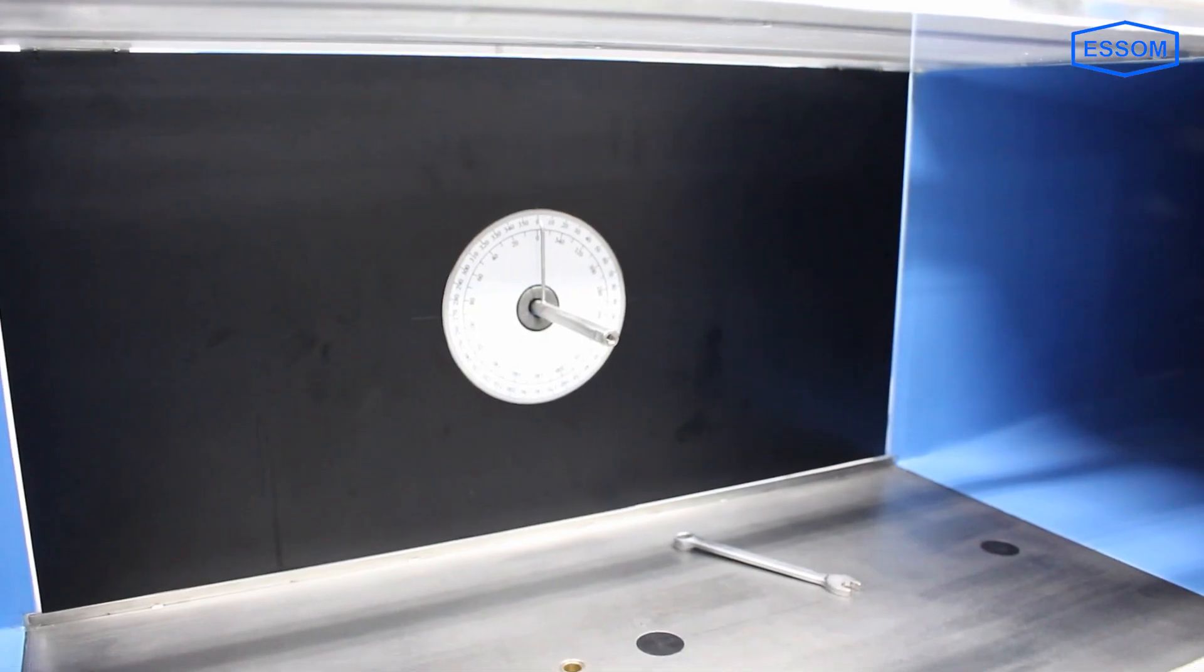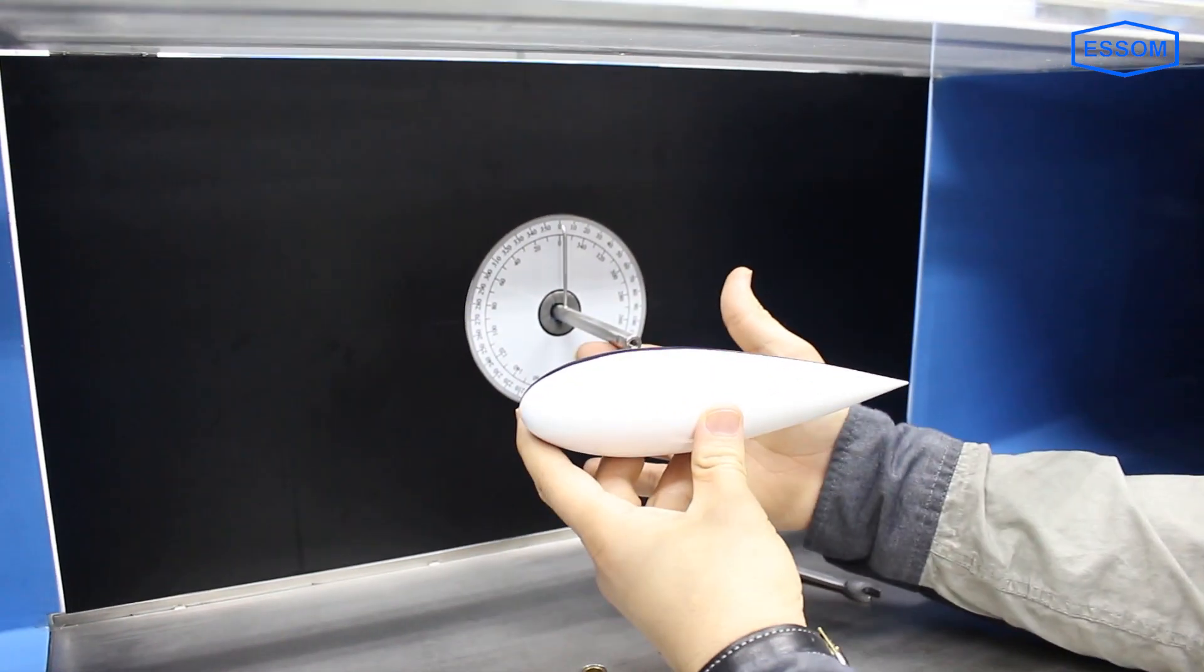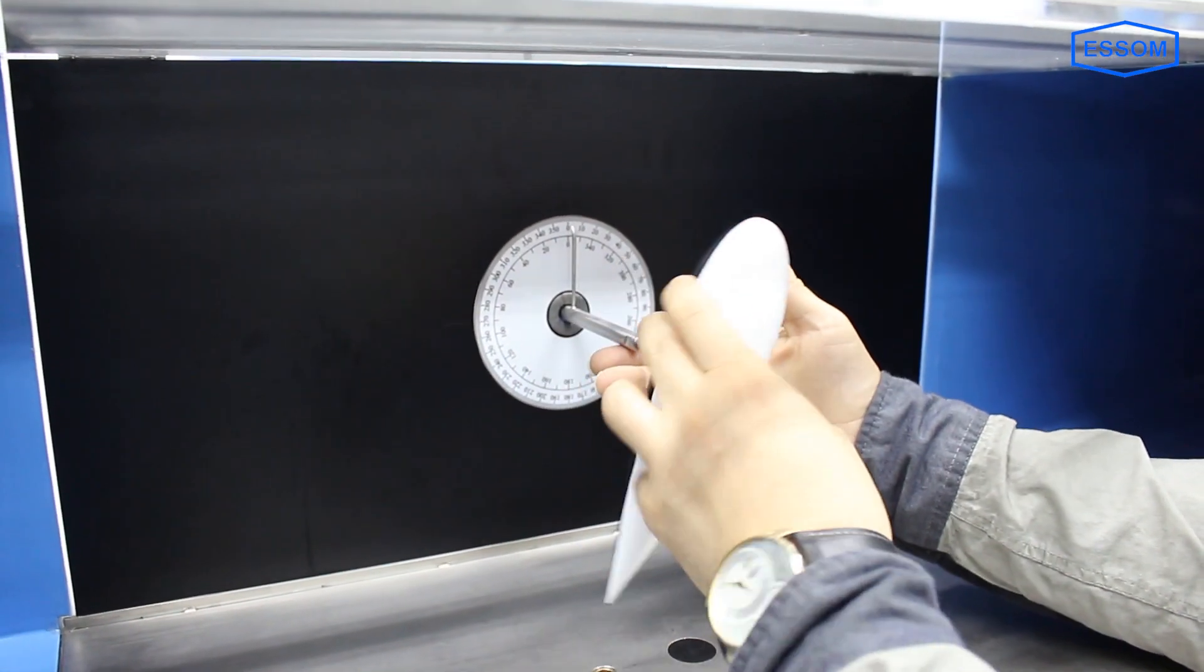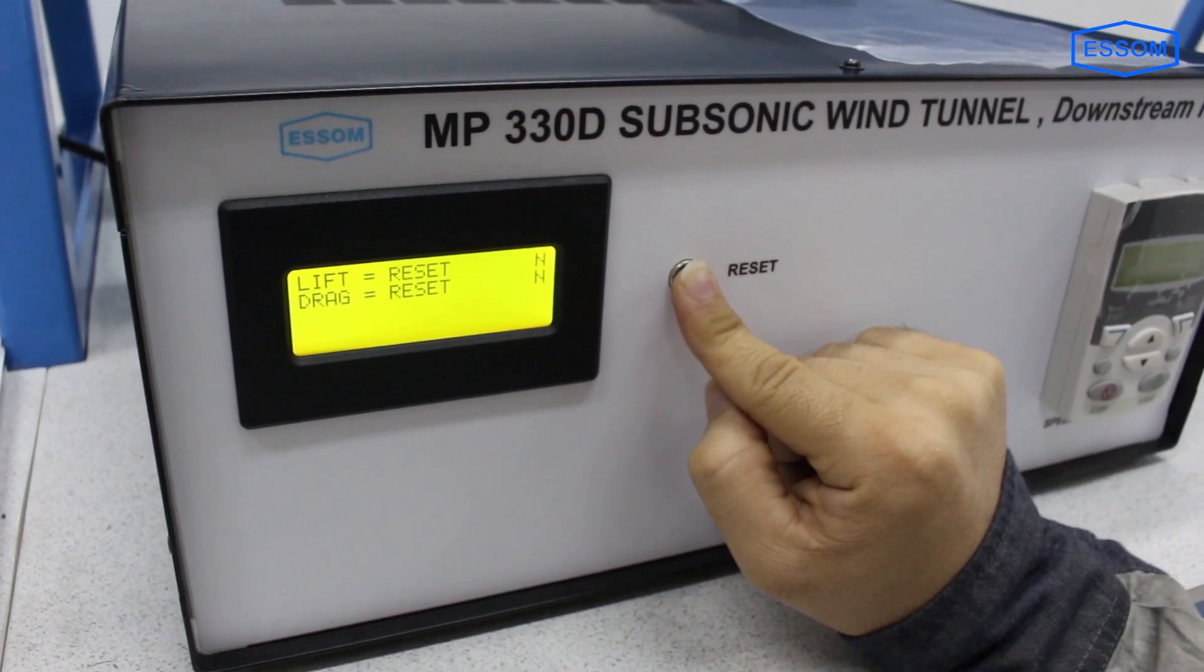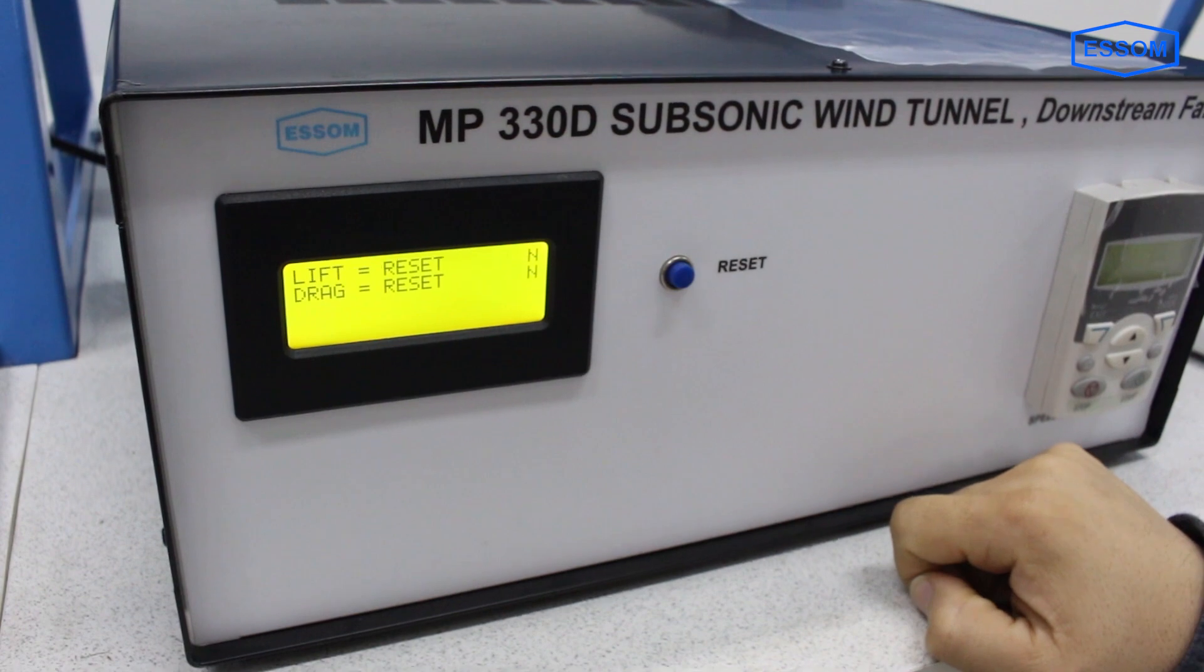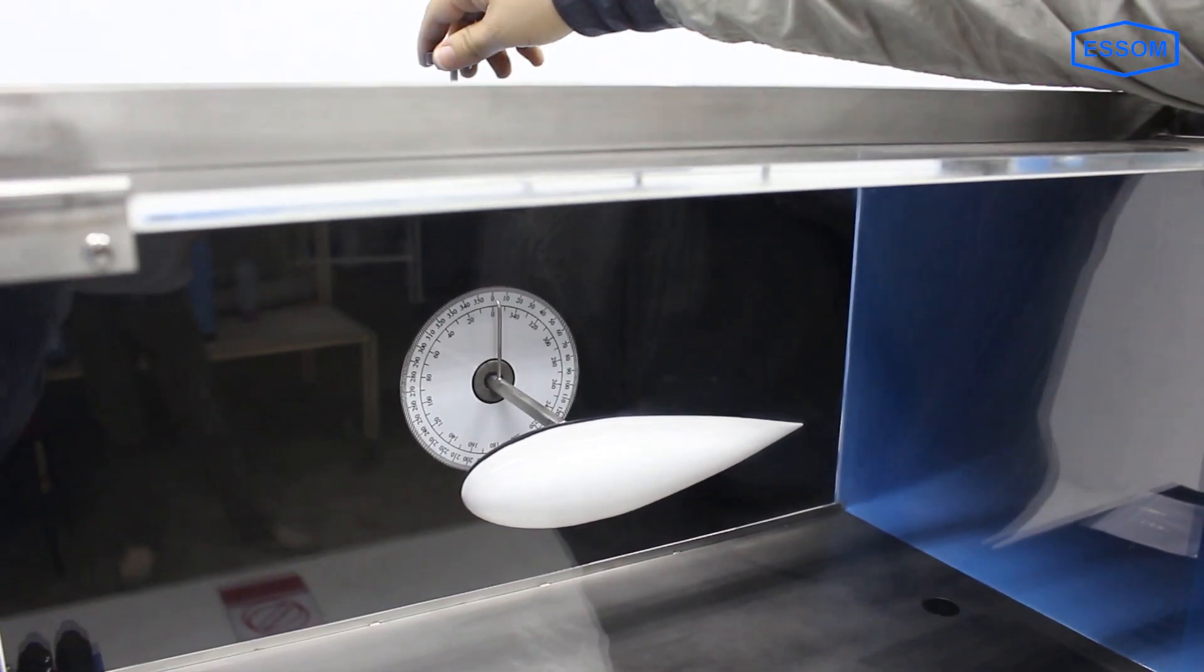Models are mounted on two components balance support with digital display for measurement of drag and lift. Model holder can be rotated to allow quick change on the angle of incidence.